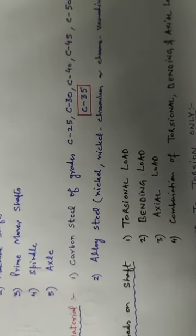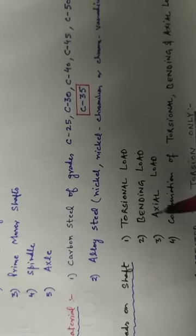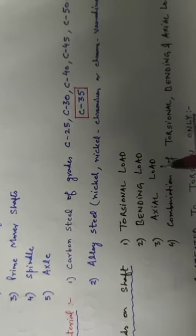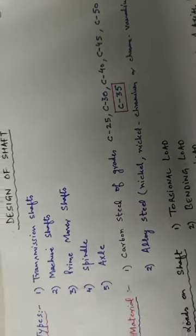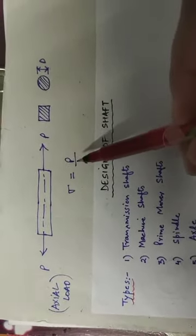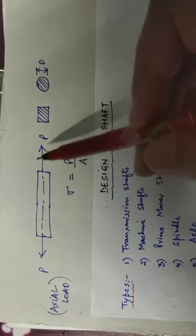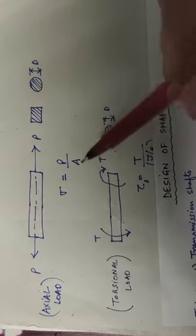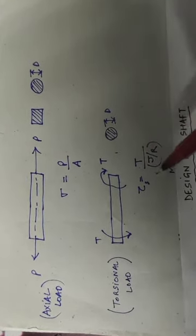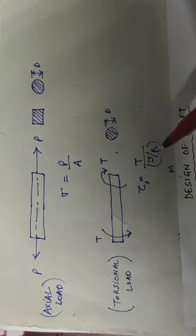The material should also have good machinability and low notch sensitivity factor. The various types of loads that act on a shaft during design are: torsion load, bending load, axial load, or a combination of torsional, bending, and axial loads. By axial load, we mean sigma equal to P by A — this is a tensile stress. By torsion load, we mean a torque or twisting moment is acting on the shaft.